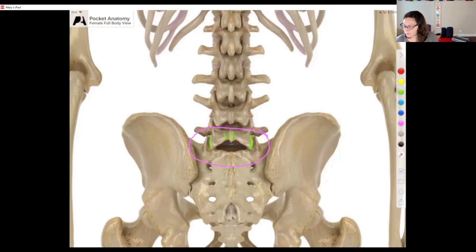But then when we look at S1, you can see a little more of the face of the facet joint because it has a little bit more of a frontal orientation.